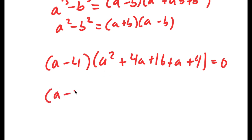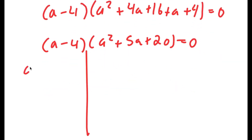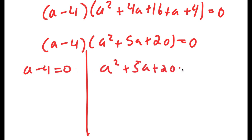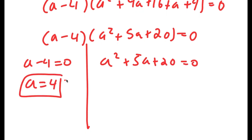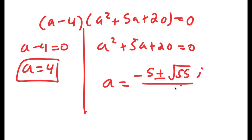This simplifies to a minus 4 times a squared plus 5a plus 20 is equal to 0. So now this gives me two equations. I get a minus 4 is equal to 0, and a squared plus 5a plus 20 is equal to 0. For a minus 4 equals 0, a is obviously equal to 4. For a squared plus 5a plus 20 equals 0, I'm going to use the quadratic formula. You get a is equal to negative 5 plus or minus the square root of 55i over 2.